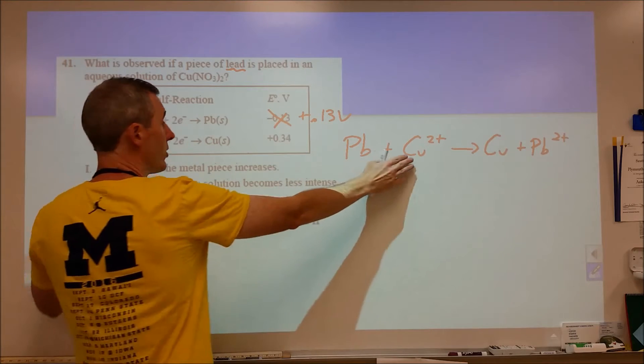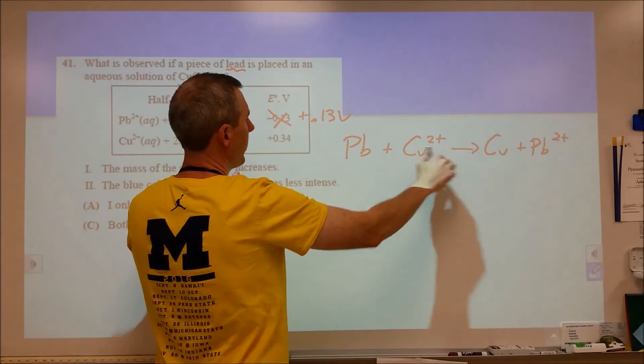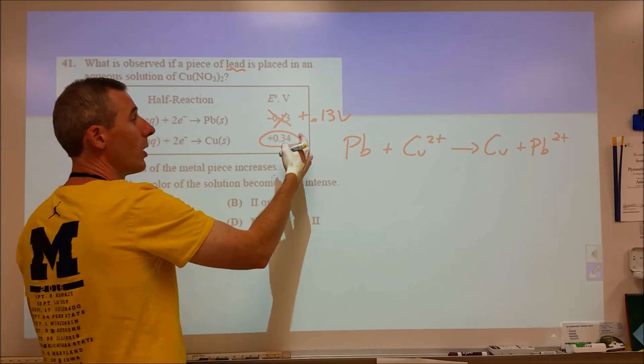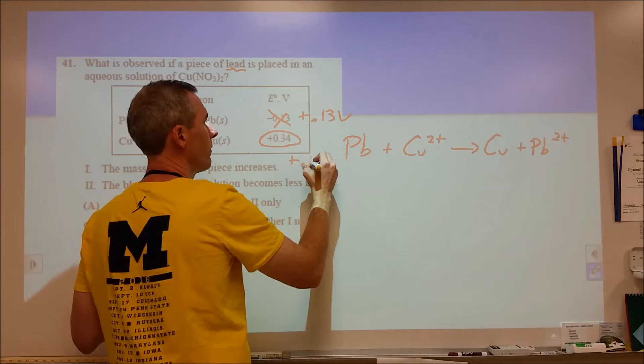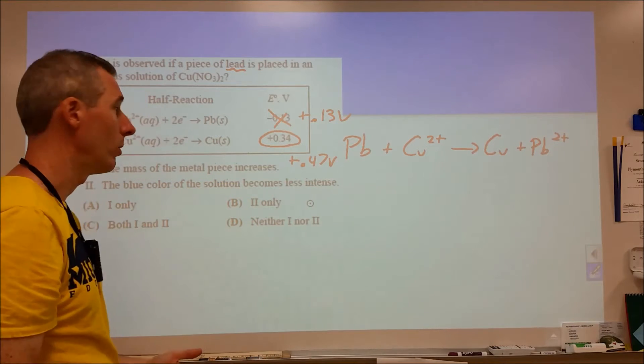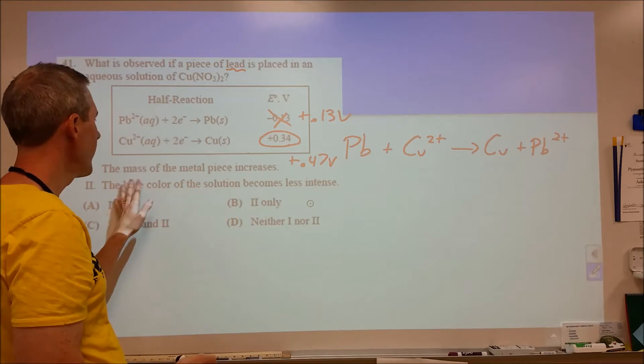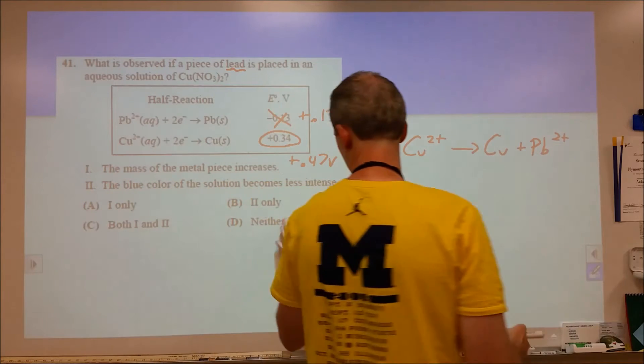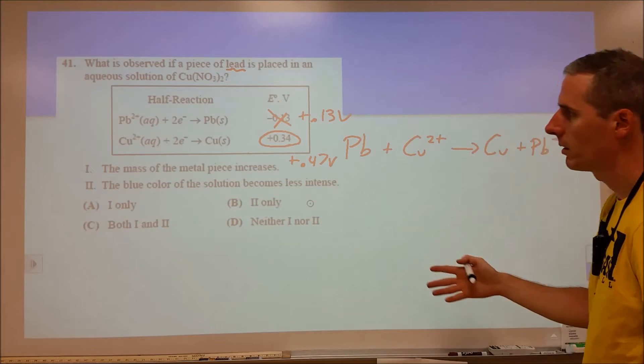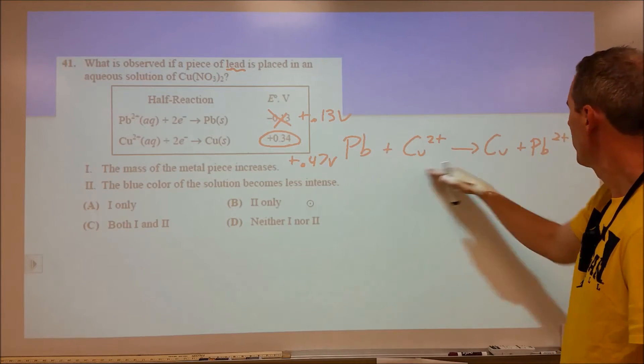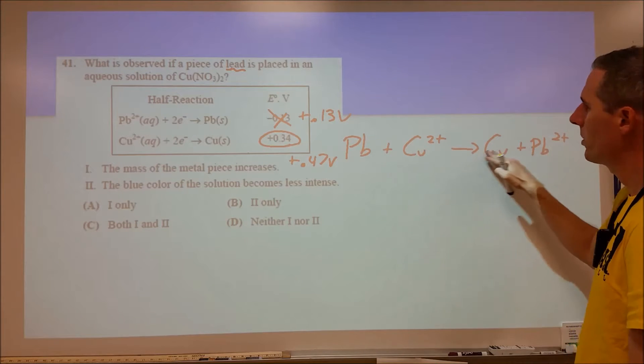The electrons are moving in the opposite direction now. This one does match. We have copper 2 plus to start, copper metal to end. That's good. So our total voltage is plus 0.47 volts. That's positive, this reaction will go. If we were to say that no reaction would take place, that would guide us towards the evil answer.